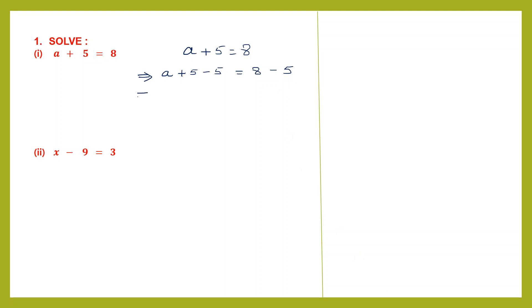So a + 5 − 5 becomes 0, leaving simply a. On the other side, 8 minus 5 is 3. So we have solved for a — a is equal to 3.